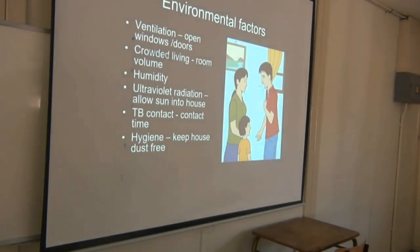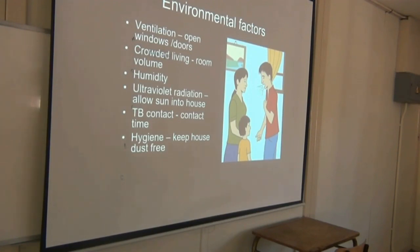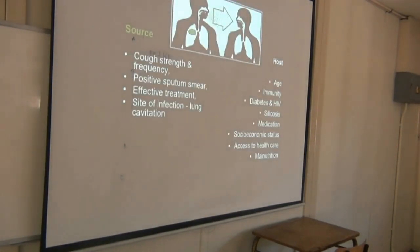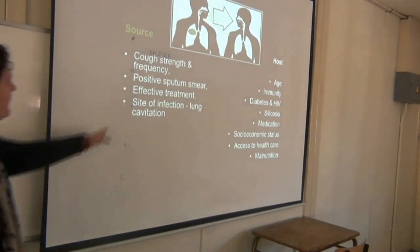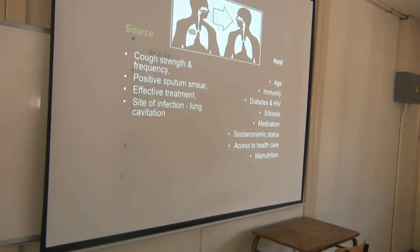Environmental factors affecting TB transmission include ventilation, crowded living, humidity — remember it likes damp areas — and ultraviolet radiation kills it. Your risk of getting TB depends on two things: the source (the infected person) and the host. For the source, factors include cough strength and frequency, whether they have a positive sputum smear, whether they're on effective treatment, and whether they have lung cavitation.